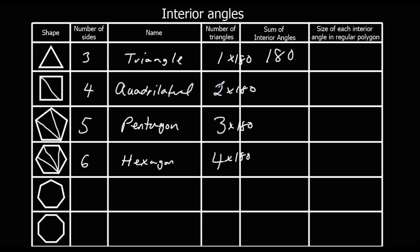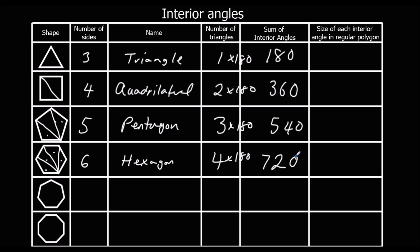Angles in the quadrilateral, because that's made of two triangles, add up to 360. A pentagon is made of three triangles, so 540. A hexagon is made of four triangles, so 720 degrees.